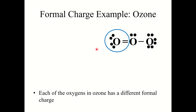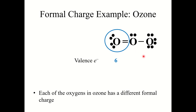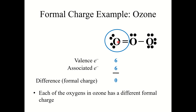Let's look at an example with the molecule ozone, which is composed of three oxygen atoms bonded together. Each oxygen in ozone has a different formal charge. Starting with the first oxygen: oxygen by itself normally has six valence electrons. Counting associated electrons, this oxygen has four electrons from lone pairs and two electrons from the bond — six associated electrons total — giving it a formal charge of zero.